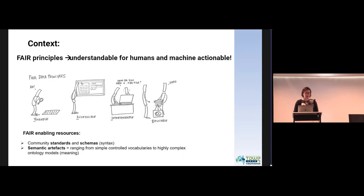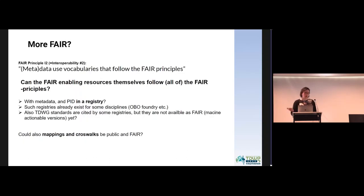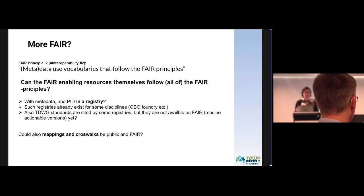I'm also talking about FAIR enabling resources — a term combining community standards and schemas that represent the syntax of the data with semantic artifacts, which are all kinds of vocabularies ranging from simple controlled vocabularies to highly complex ontology models. All of these FAIR enabling resources should be FAIR themselves. The interoperability principle number two states that metadata and data should use vocabularies that follow the FAIR principles. Is this possible, and how could we achieve this?